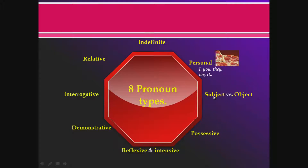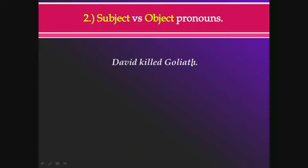The second category is subject versus object pronouns. Personal pronouns can function as either subject pronouns or object pronouns — these are not mutually exclusive categories; it's a functional description. Think of it like a car: a car is a vehicle, but it can be used to go to work or transport cargo. The question is: what job does the pronoun do — does it replace the subject or the object of the sentence?